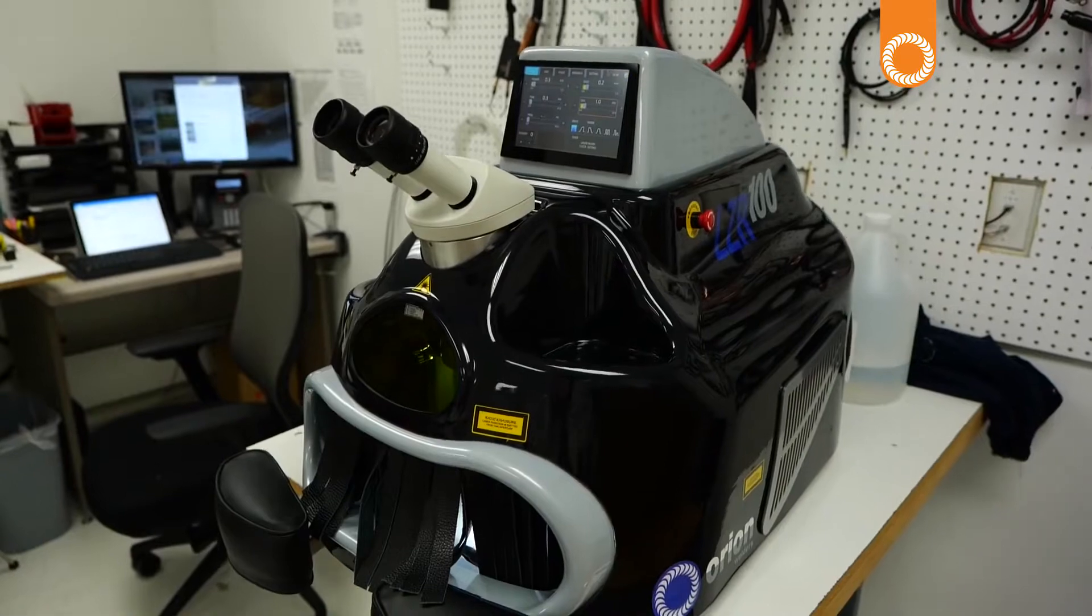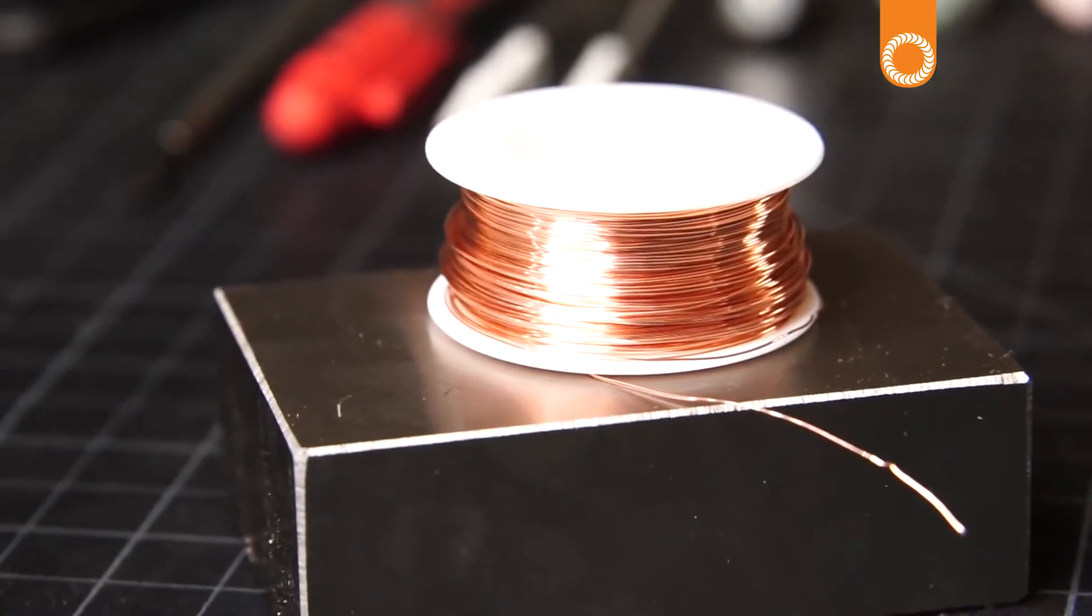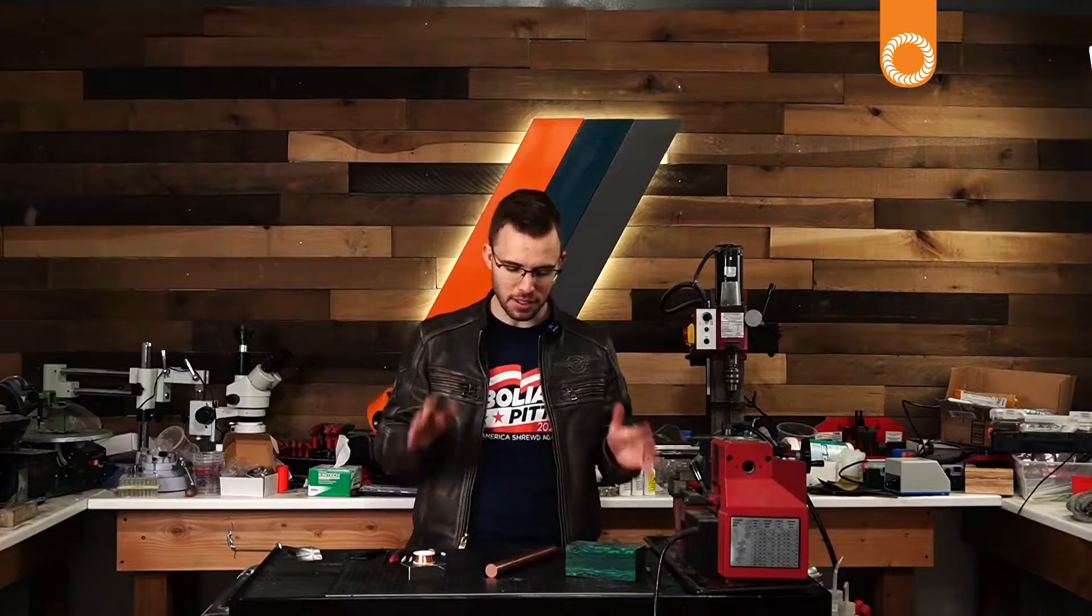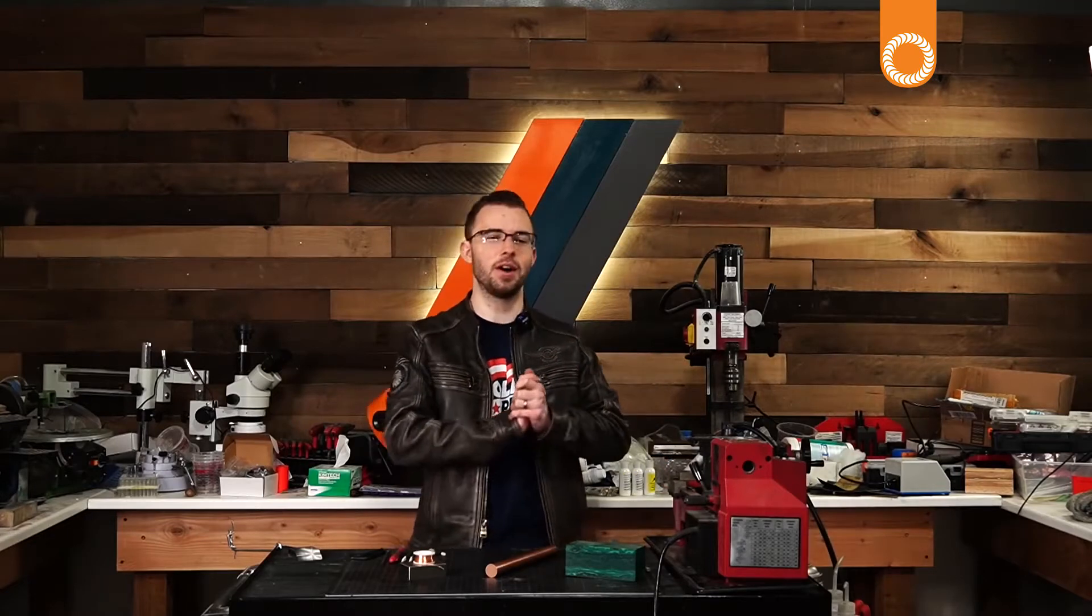I'm going to use my Orion laser welder and this copper wire to fill in that seam. So that's the materials as well as the backstory to it all. Let's go ahead and get right into the making.